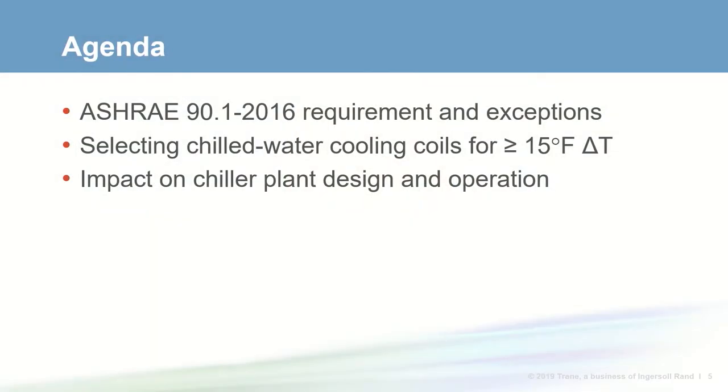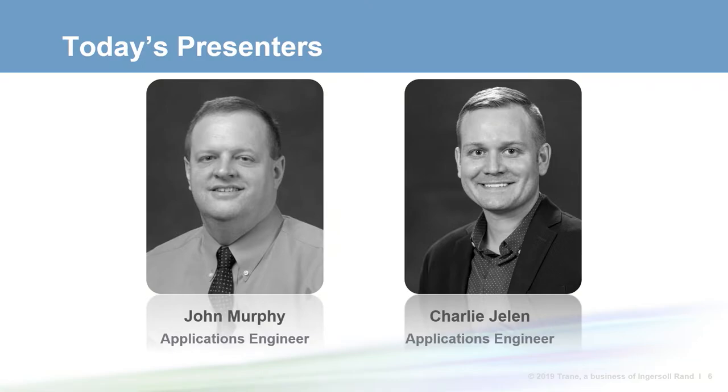Welcome to Train Engineers Newsletter Live program. I'm Jeanne Harshaw and today we'll discuss selecting chilled water coils to meet the new ASHRAE 90.1 requirement for a 15 degree delta T. We'll start by reviewing the details of this new requirement along with some of the exceptions, then look at the selection process, and finally discuss how this impacts the design and operation of the chiller plant. Today we have Trane application engineers John Murphy and Charlie Jelen to cover this topic.